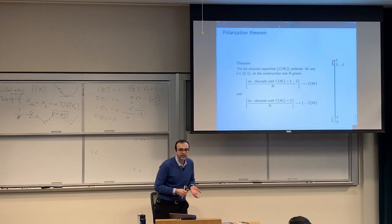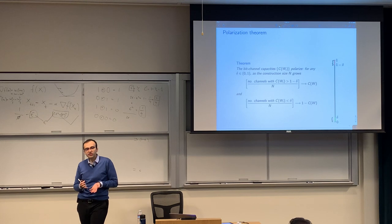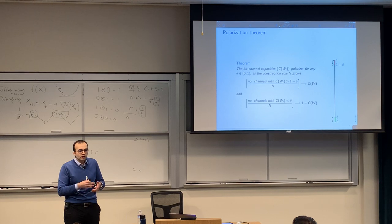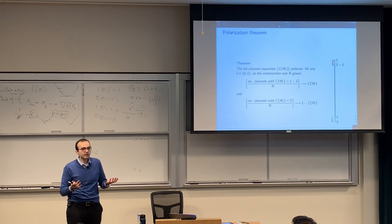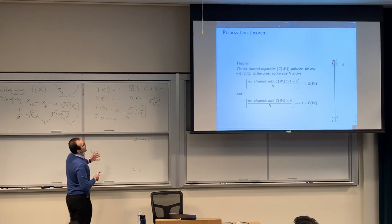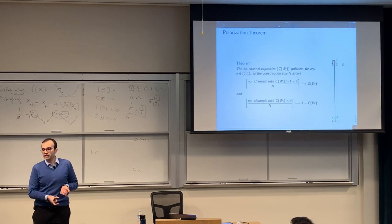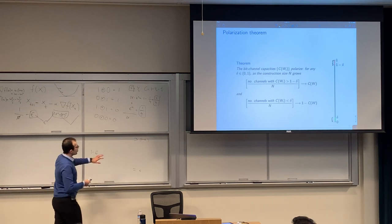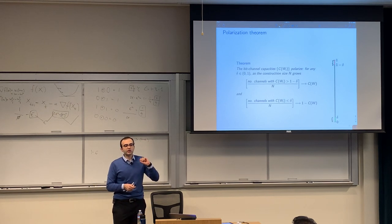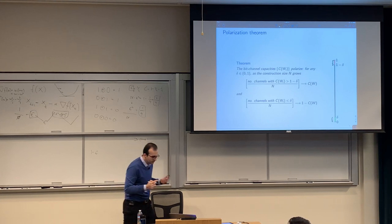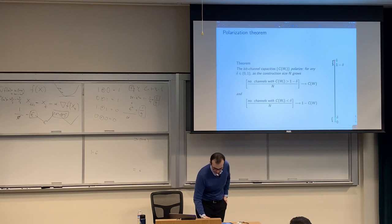How do we use this scheme to achieve capacity? It's simple: we know how to transmit over perfect channels — just send your bit directly. Over completely noisy channels, nothing can be done. This transformation distills the noisy world into completely noisy or noiseless channels. Transmit directly over the noiseless ones, and set the bad (frozen) inputs to zero so that both encoder and decoder know those values. Then run the successive cancellation decoding. This achieves capacity, as the theorem tells us.